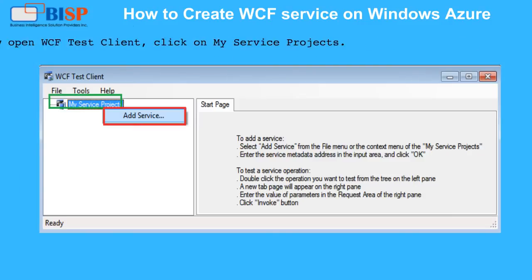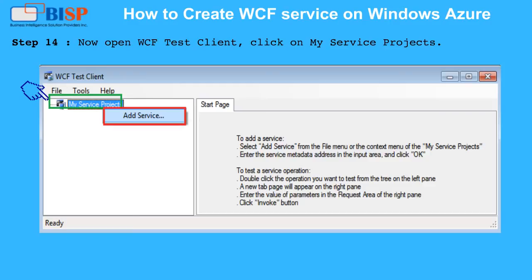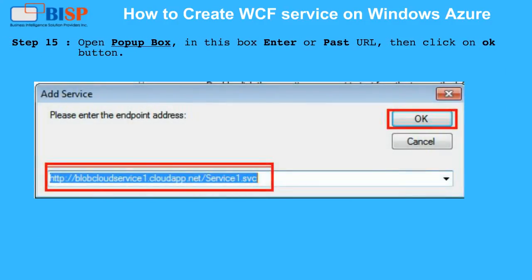Step 14: Now open WCF Test Client. Click on My Service Projects, then click on Add Service. Step 15: Open the popup box. In this box, enter or paste the URL, then click on the OK button.